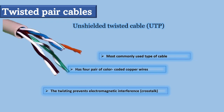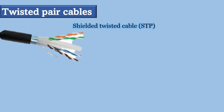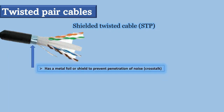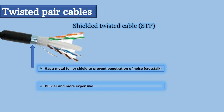The second type of twisted pair cable is shielded twisted pair, or STP. STP cable has a metal foil or shield that encases each pair of insulated conductors. The metal foil or shield prevents the penetration of noise or crosstalk. However, it's bulkier and more expensive, and you can only find it in industries, not so much in households.